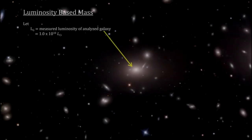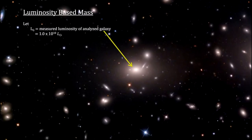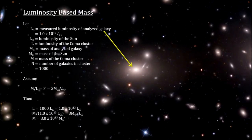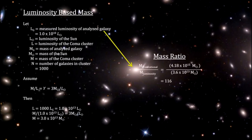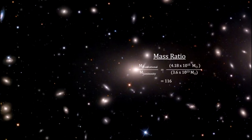Zwicky measured the luminosity of the average galaxy in the Coma cluster. Using a mass-to-light ratio of three, he calculated its mass. When he multiplied the average times a thousand galaxies in the cluster, he came out with a number that was over a hundred times less than the mass calculated via the Virial Theorem based on gravity.